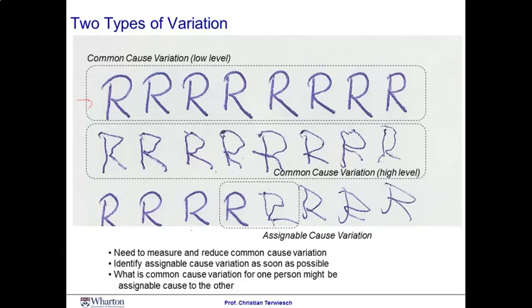You notice not every R is identical. There's some small variation from one letter to the other, but they look pretty similar. We refer to the variation from one letter to the other as a common cause variation. And the level of common cause variation here is low.